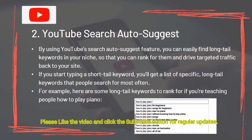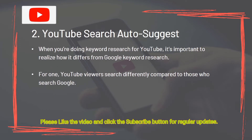Tool 2: YouTube Search Autosuggest. By using YouTube's Search Autosuggest feature, you can easily find long-tail keywords in your niche so that you can rank for them and drive targeted traffic back to your site. If you start typing a short-tail keyword, you'll get a list of specific long-tail keywords that people search for most often. When doing keyword research for YouTube, it's important to realize how it differs from Google keyword research, as YouTube viewers search differently.